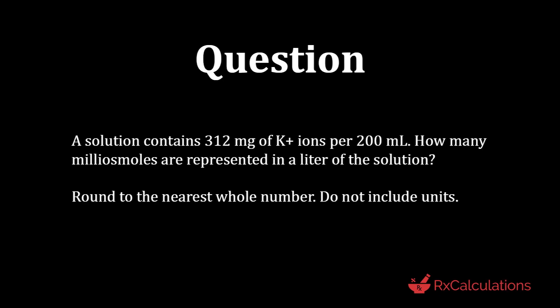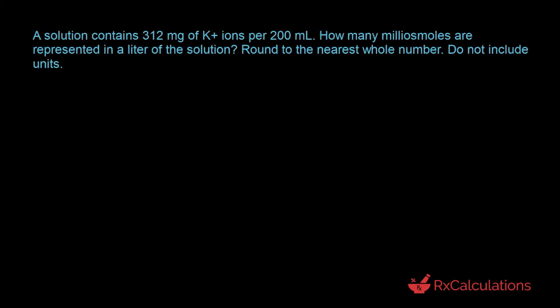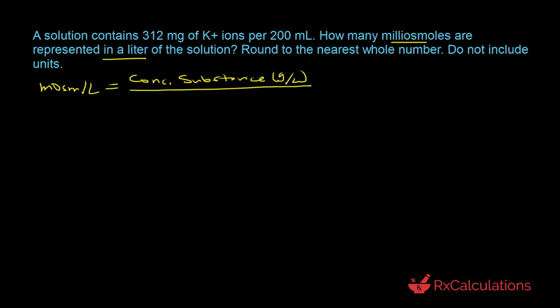This question says: a solution contains 312 milligrams of potassium ion per 200 milliliters. How many milliosmoles are represented in a liter of the solution? Round to the nearest whole number. Do not include units. The goal is to calculate the milliosmoles present in one liter of the solution — another way of saying calculate the Osmolarity. We use the Osmolarity equation: milliosmoles per liter equals concentration in grams per liter divided by molecular weight, times number of species, times a thousand.